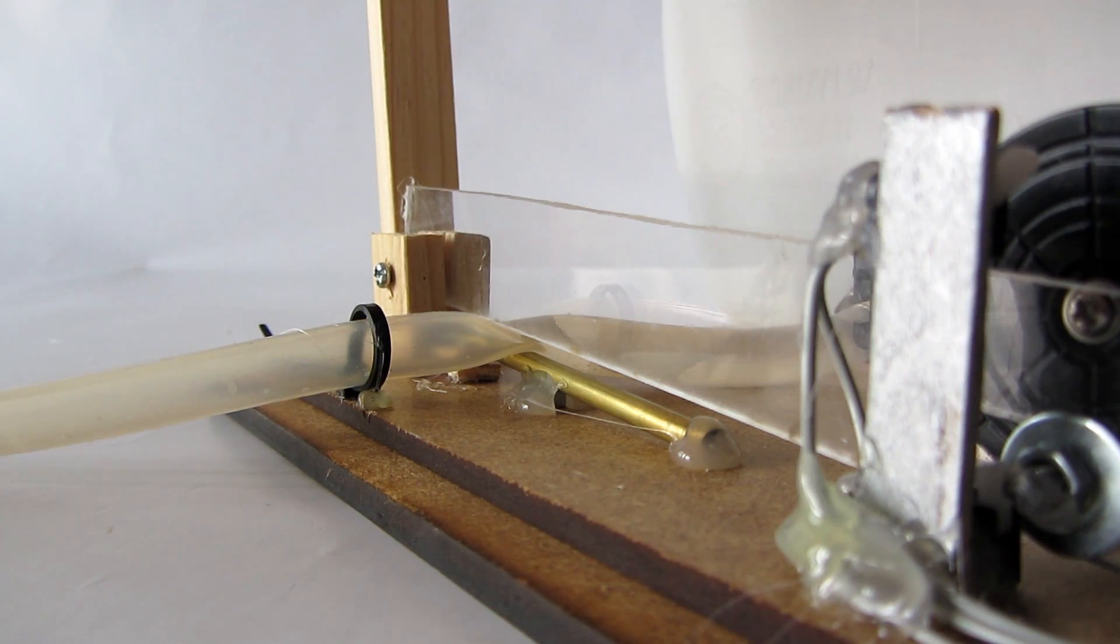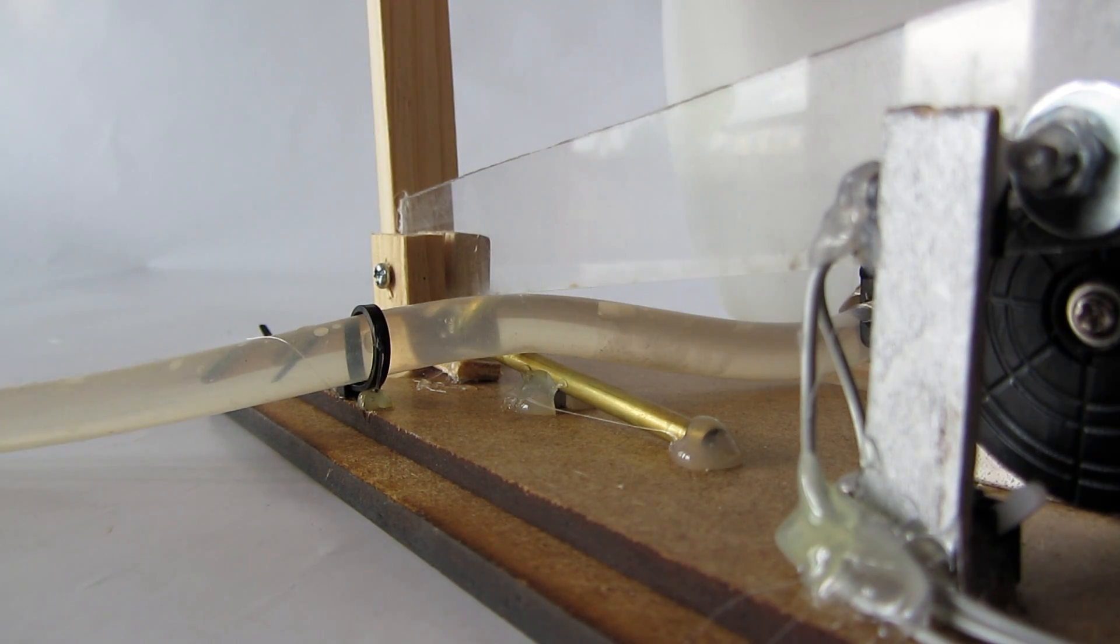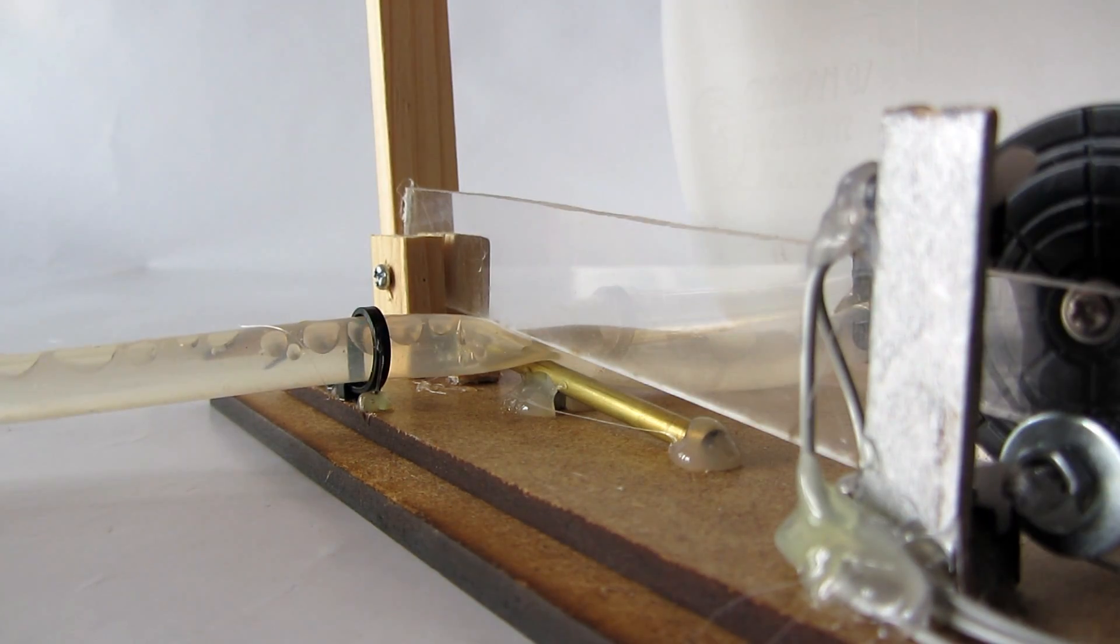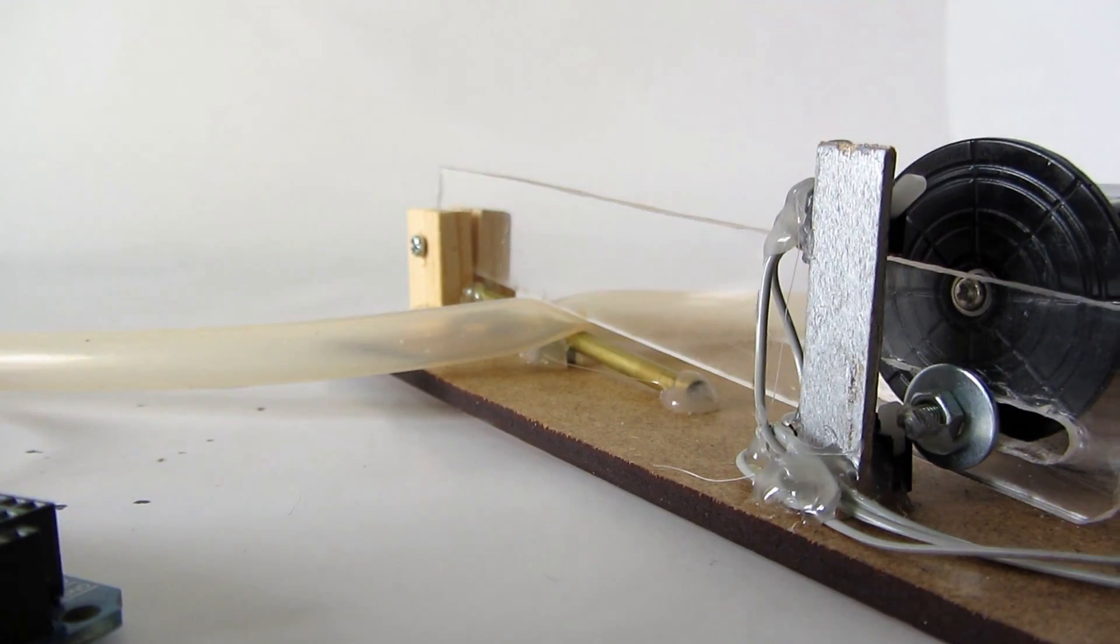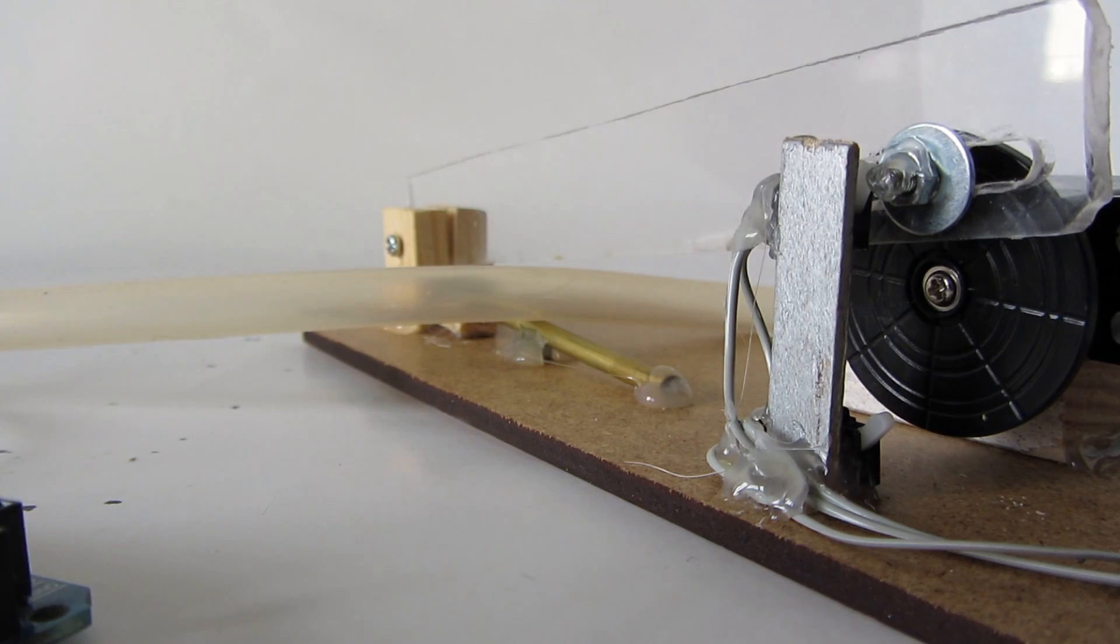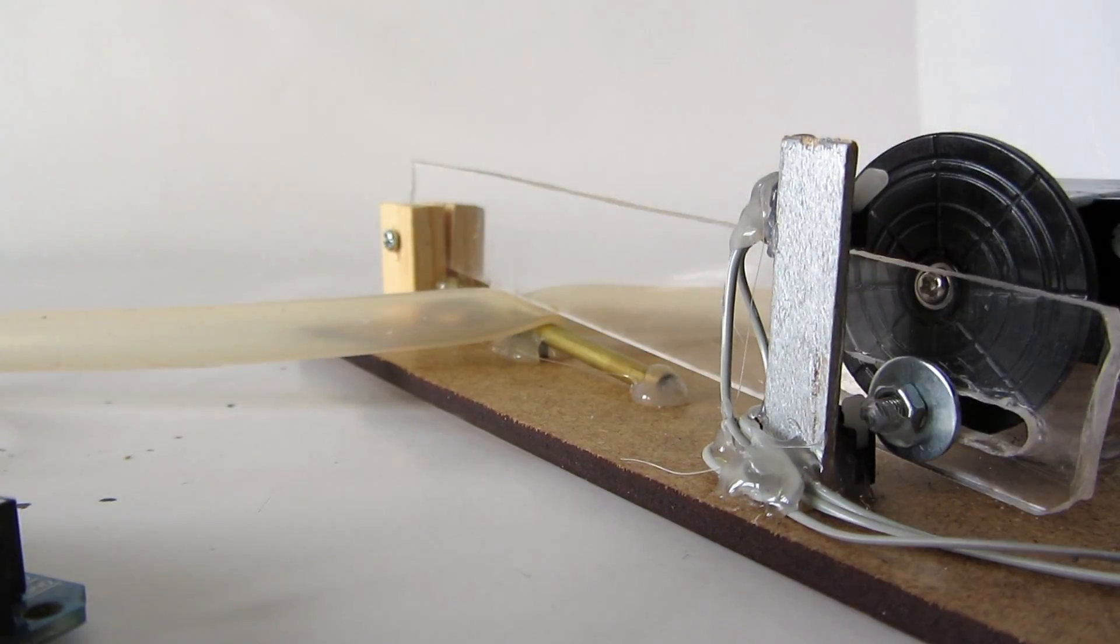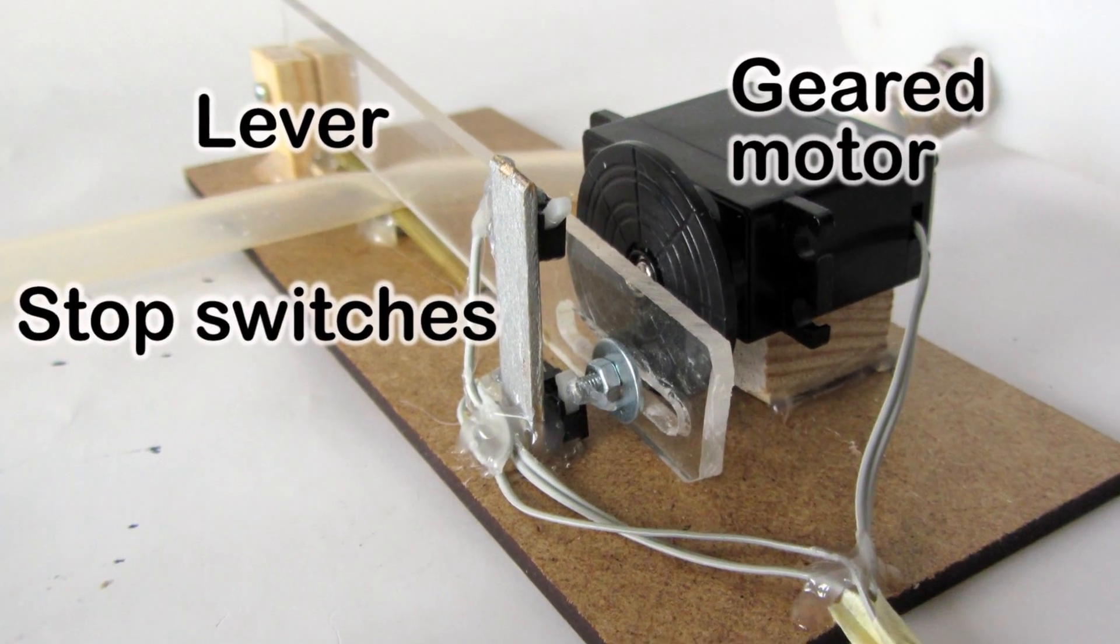In order to control the water flow I put together a makeshift valve which squeezes down the tubing with the help of a lever thus blocking the water flow. I used a broken servo motor modeled into a geared motor with stop switches at the levers top and bottom position.